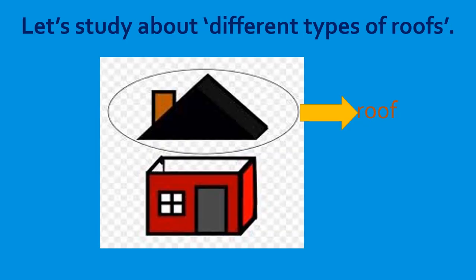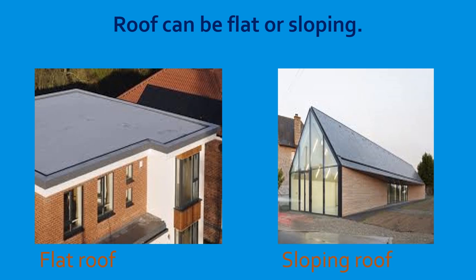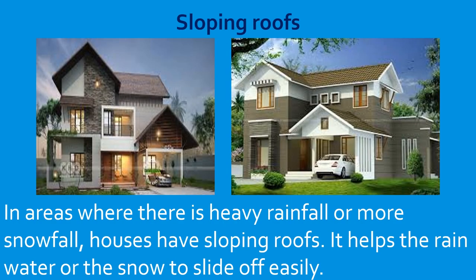Now let's study about different types of roofs. The roof is the part that covers the top of a house. Roofs can be flat or sloping. In areas where there is little rainfall or less snowfall, we build houses with flat roofs. In areas where there is heavy rainfall or more snowfall, houses have sloping roofs, which help the rainwater or snow to slide off easily.